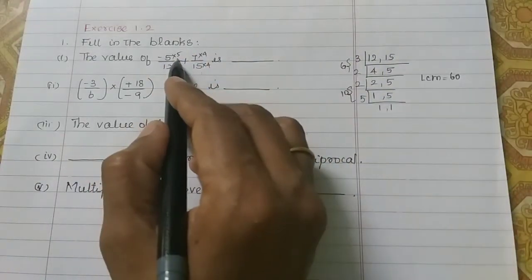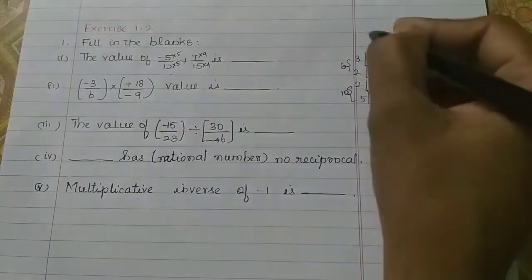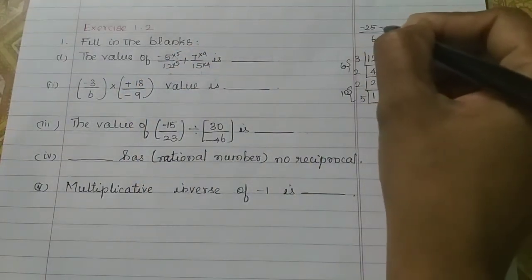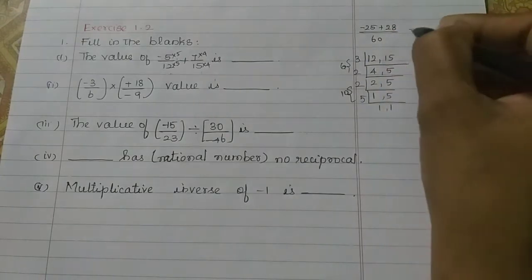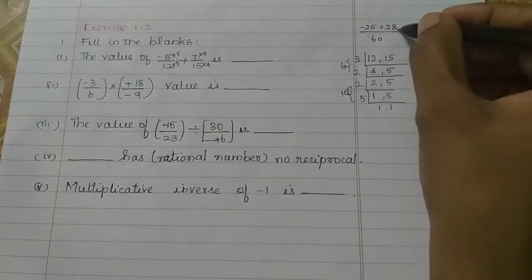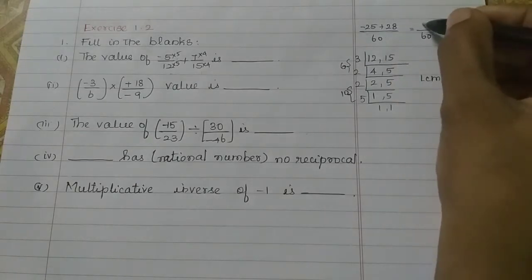So, now, minus 5 into... Denominator is 60. We will add the denominators. Here, minus 5 into 5, minus 25. Plus 7 fours are 28. So, base 60 is 60. In the numerator, 28 minus 25 is plus 3.